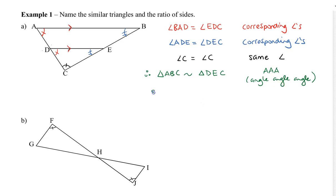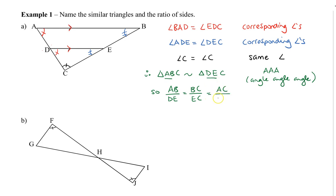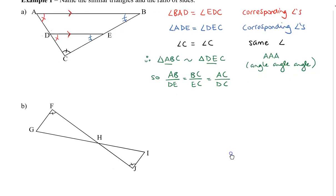So now we know that AB divided by DE equals BC divided by EC, which equals AC divided by DC. Let's take a look at another example.